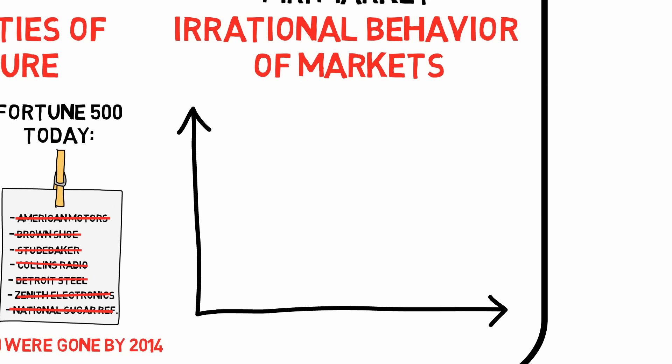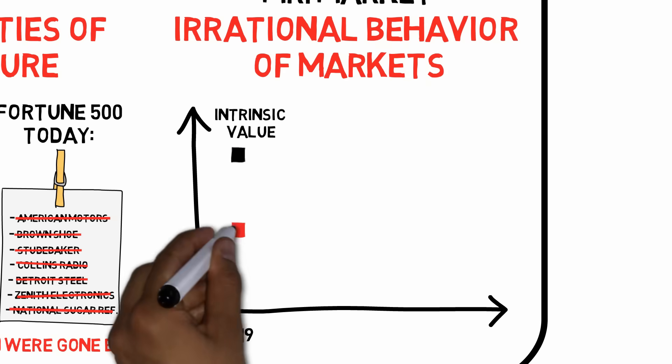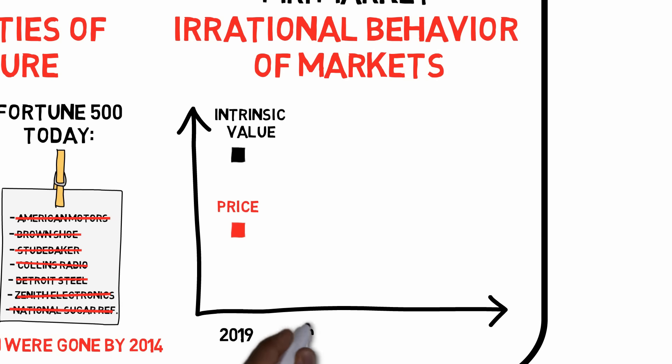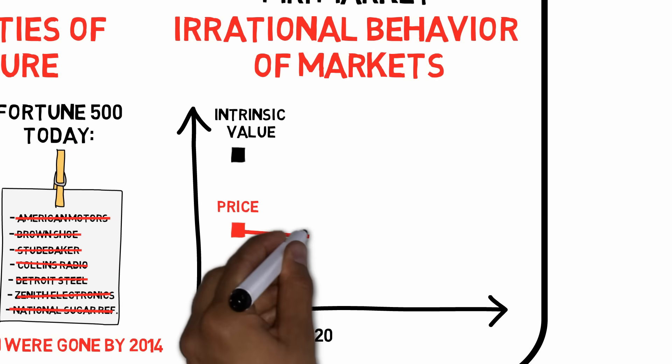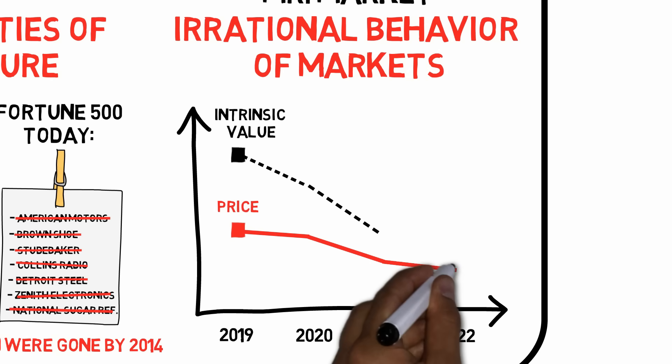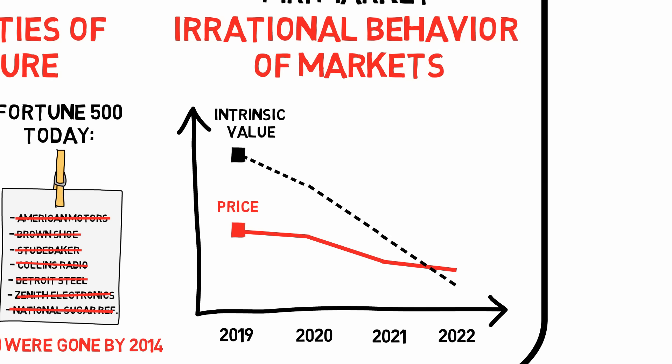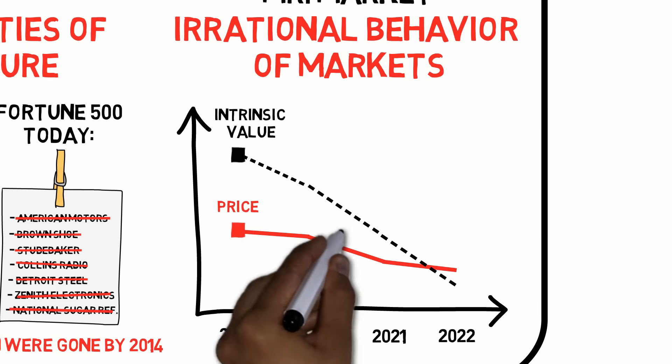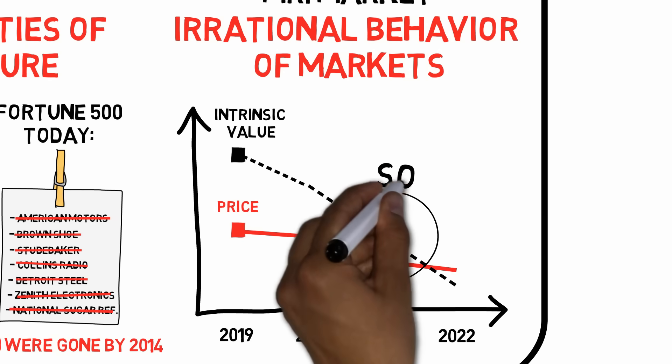Even if the investor concludes that there's a discrepancy between the true, so-called intrinsic value of a security and its price, the market may not realize its mistake. And after holding on to that same security for years, during which the market remains irrational, the investor may have to witness how his original thesis no longer holds true, whereupon he will have to sell that security off with a loss.